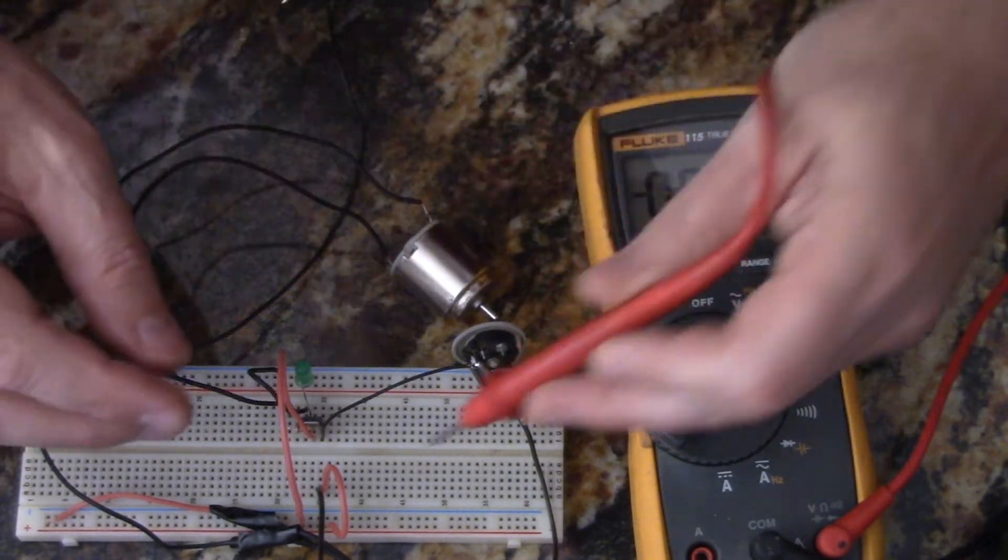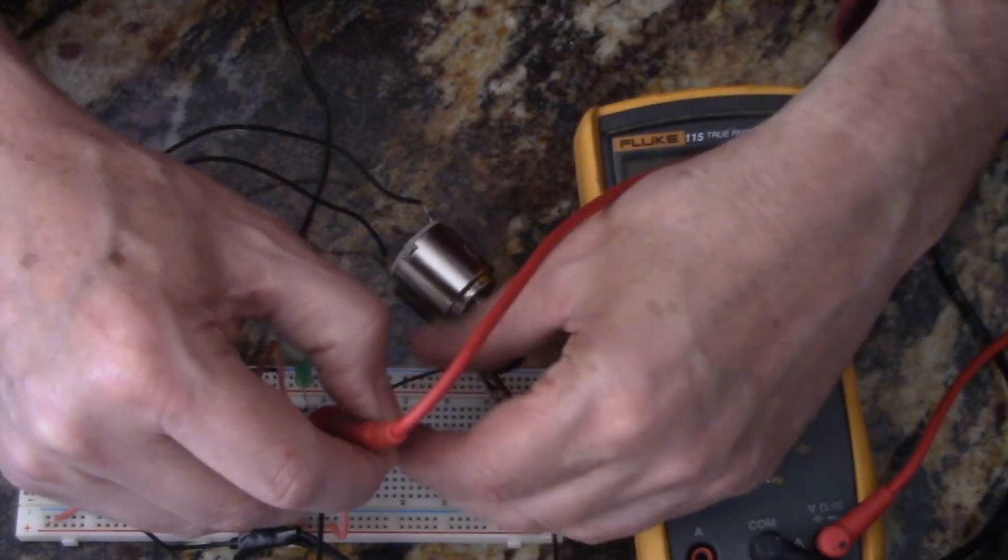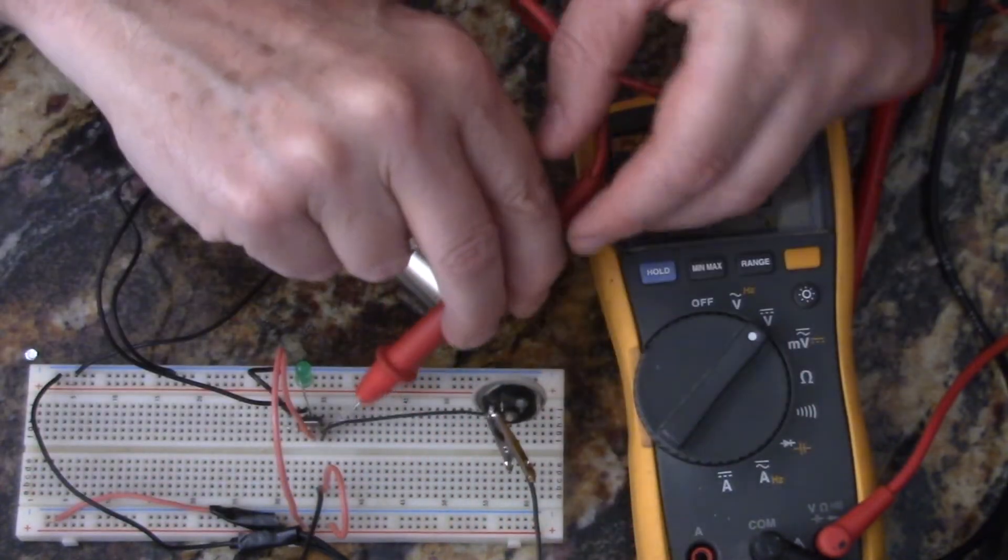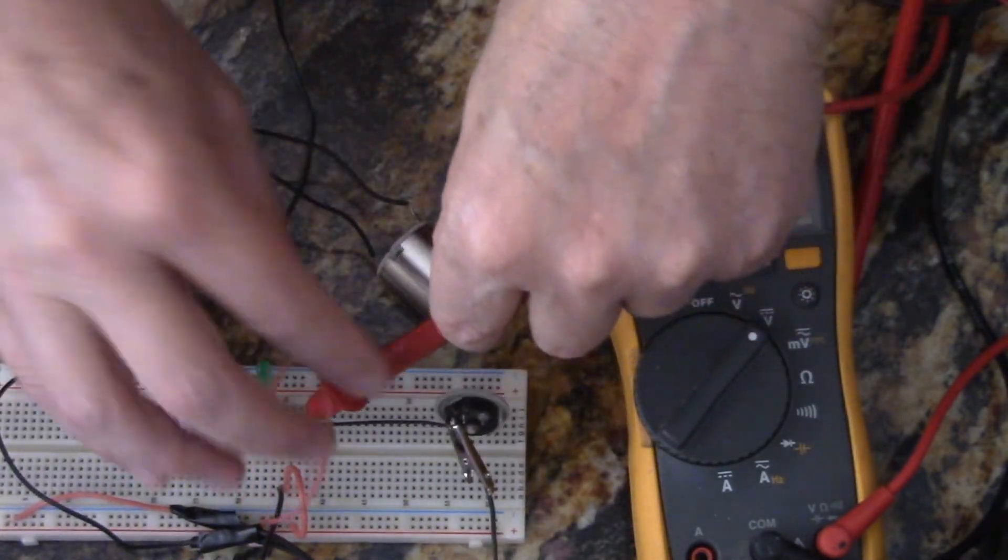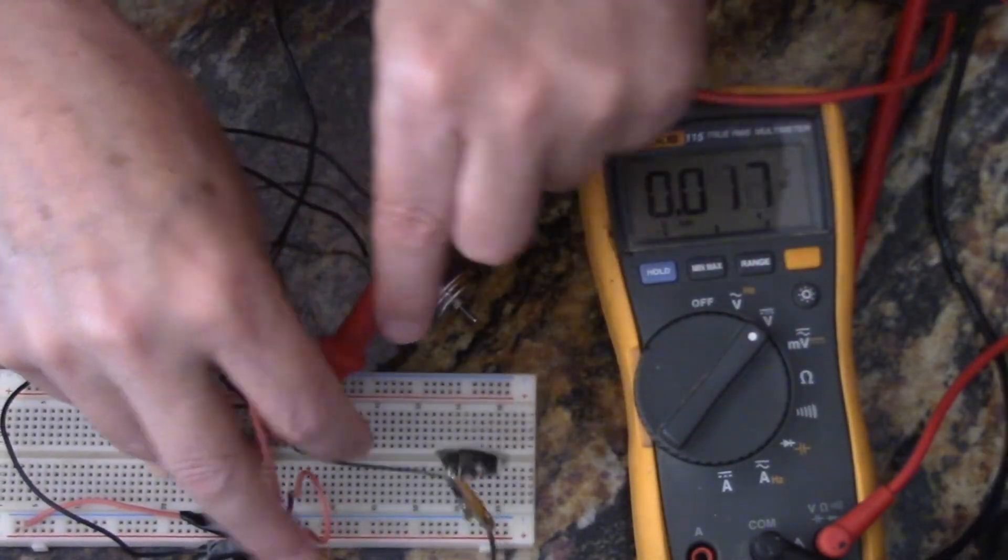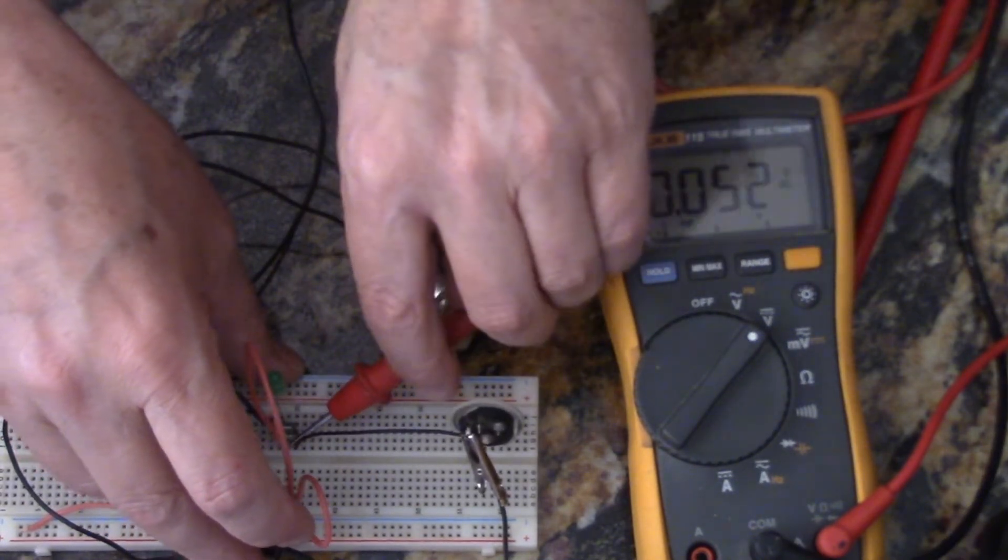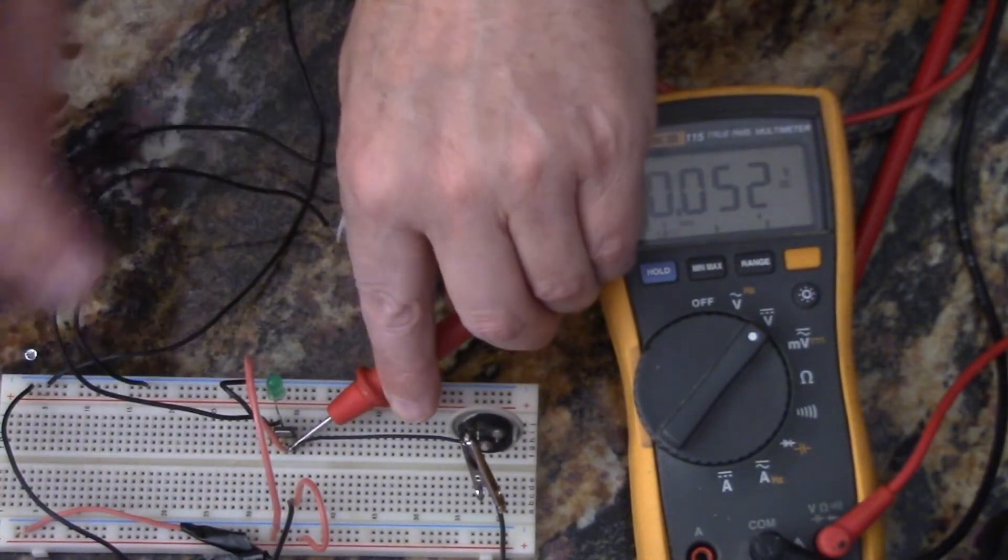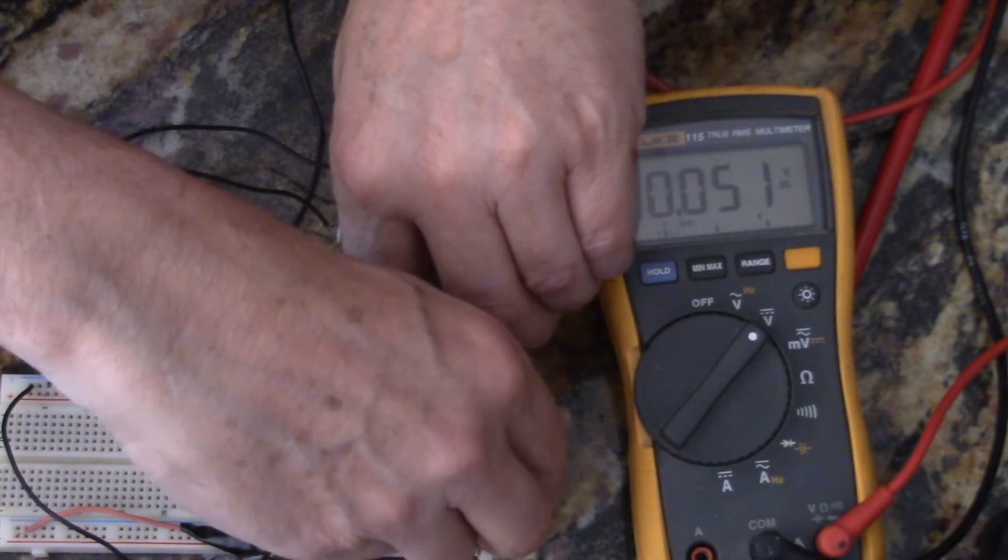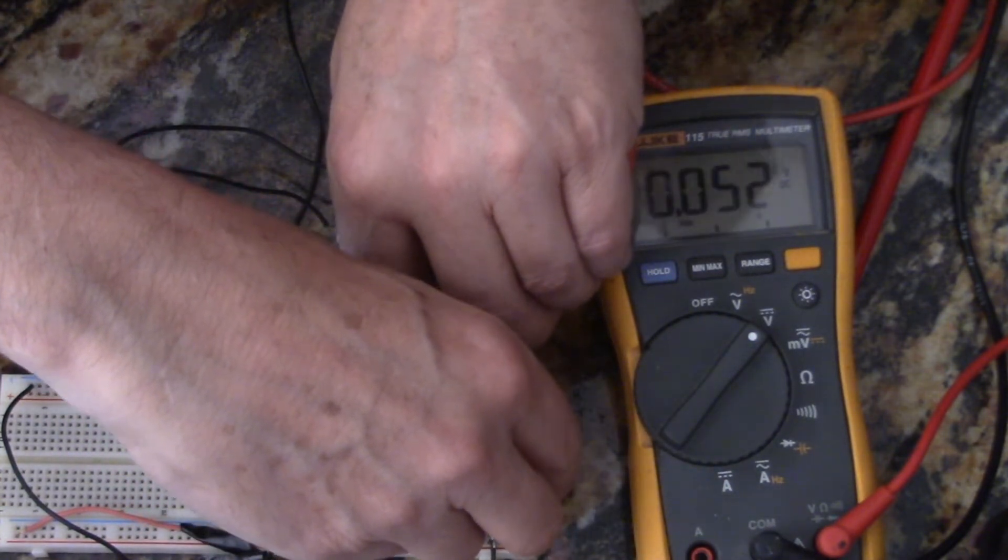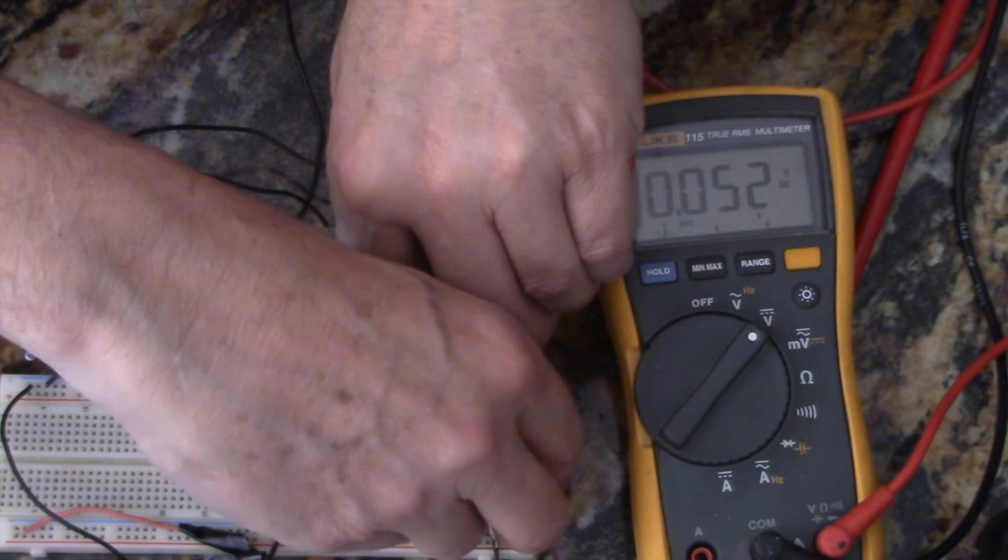So I'm going to test right at the divider, which is going to be a test lead right there. And so we have 0.52 volts.